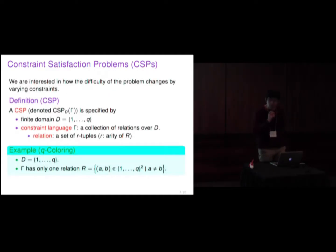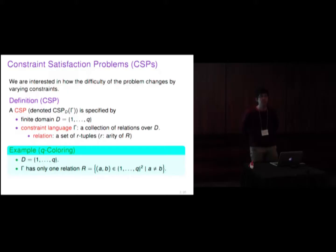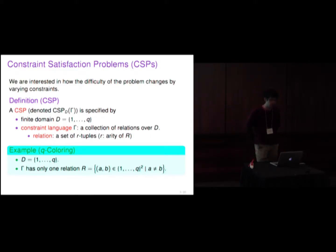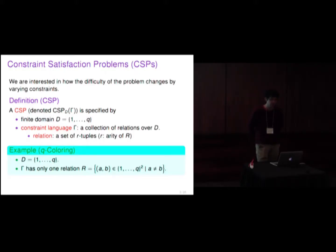We are interested in how the difficulty of the problem changes by varying constraints. We want to parameterize CSP by using the constraints we are allowed to use. CSP here is specified by a finite domain D from 1 to Q and a constraint language gamma. Here, a constraint language is a collection of relations over D, and a relation is just a set of R-tuples, where R is the arity of R.